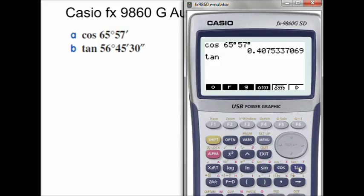So if I had a problem with degrees, minutes and seconds, all I do is hit that degree, minute, second button—this one here—three times, once after each number has been entered. And that's all there is to it.